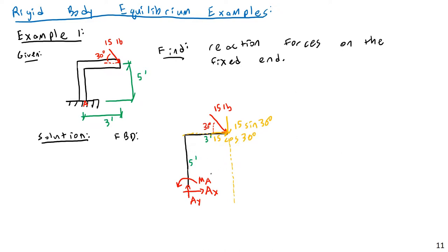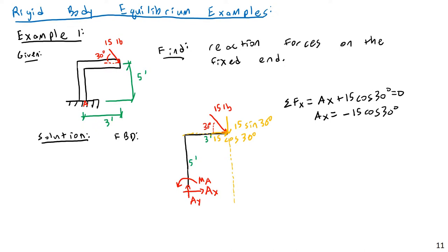Let's start by getting AX and AY. For AX, I do a summation of forces in the X direction: AX plus 15 times the cosine of 30 degrees equals 0. Therefore AX equals negative 15 cosine of 30, which is negative 12.99 pounds.